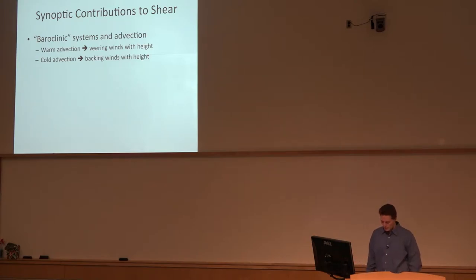In other later presentations, we'll get into the details of how that relates to supercell potential, but in this case, background warm advection is a good profile for the right kind of wind structure to favor supercell storms, and the cold advection is just the opposite. It's the curvature of the hodograph is actually the opposite.